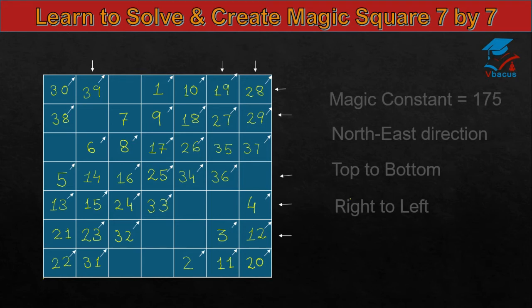North-east direction, there is no square, come to bottom, write 40, 41, 42. Again, there is no square, write 43 below 42, 44, 45, no square, go to left, 46. North-east direction, 47, 48. There is no square, come to bottom, so we have filled the magic square 7 by 7, from 1 to 49.